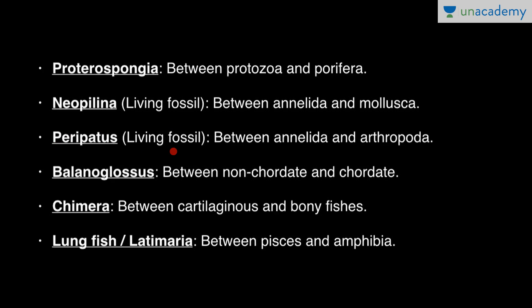Peripatus is also a living fossil and it is a connecting link between Annelida and Arthropoda — showing that Mollusca and Arthropoda have a common ancestor in Annelida. Balanoglossus is a hemichordate and it is a connecting link between non-chordates and chordates.